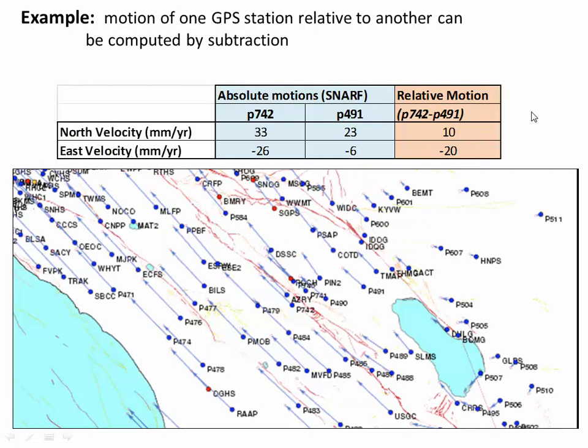So I'll close with a final example. What if we want to understand the motion of one GPS velocity relative to another GPS velocity? So both things are moving in an absolute reference frame and we essentially want to pick one of them to hold fixed. How do we do this mathematically? Let's use this example. Here's a bunch of GPS stations that are on the Pacific plate and the North American plate. This is the San Andreas Fault right here, and this is the San Jacinto Fault right here.